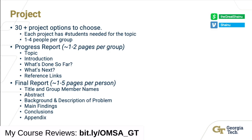Now let's talk about the project. You have 30 or more project options to choose from, one of which is a real-life situation from your work that you want to model using Arena, SimPy, or even Excel. You can have up to four members in your group, or do it solo. Each project topic has a member limit, so review those carefully. I highly recommend finding your people through Piazza or Slack and reviewing the project options together to form a group of two or three.